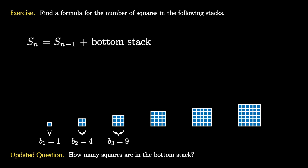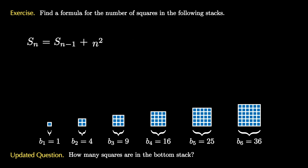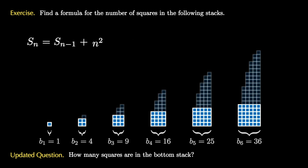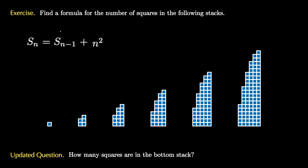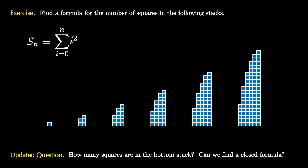This looks more straightforward, as we see that the bottom layers are the successive square numbers. Therefore, S_n equals S_{n-1} plus n squared. Realizing that the zero stack has zero squares, we see that S_n is equal to the sum of the first n squares. Can we find a closed formula for this sum?